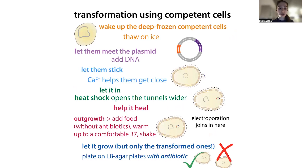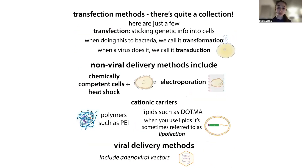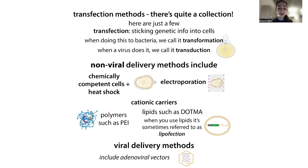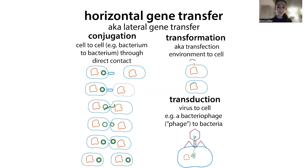To make cells competent in the lab we use methods like calcium chloride and heat shock, or electroporation. It turns out some cells are naturally competent — including, rather alarmingly, many disease-causing bacteria. They have special proteins on their surface that help facilitate taking up genetic information such as antibiotic resistance genes from the environment.